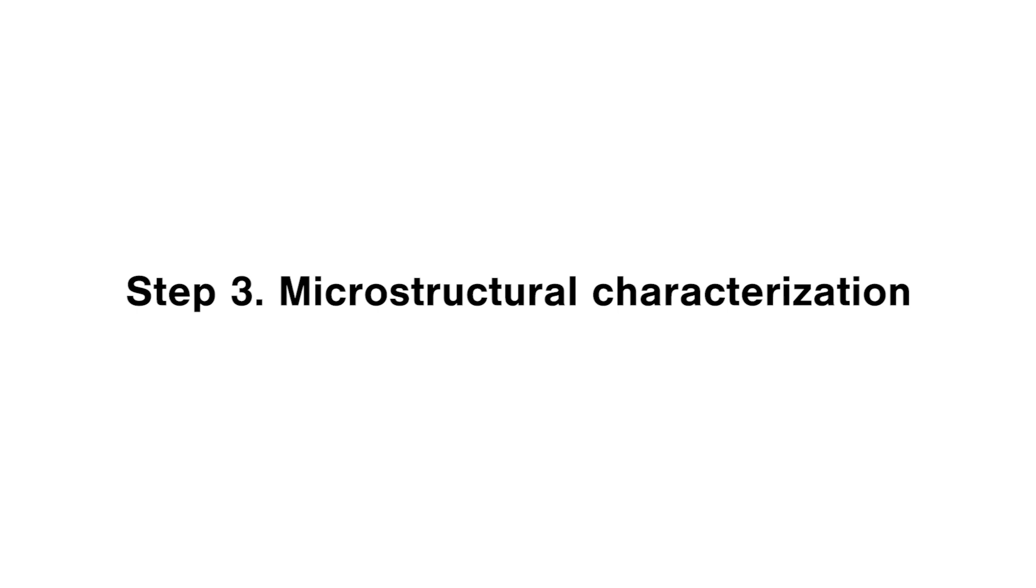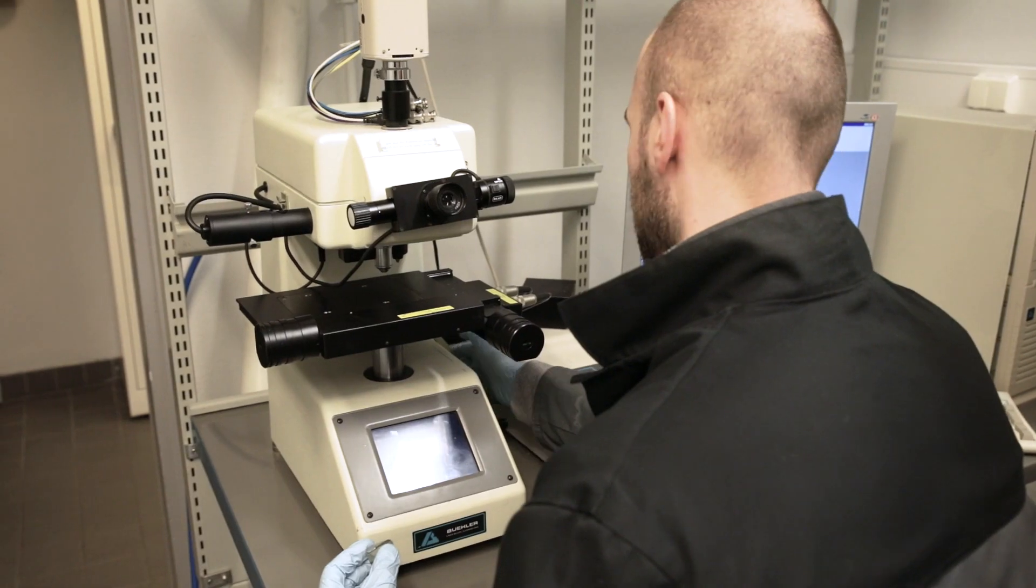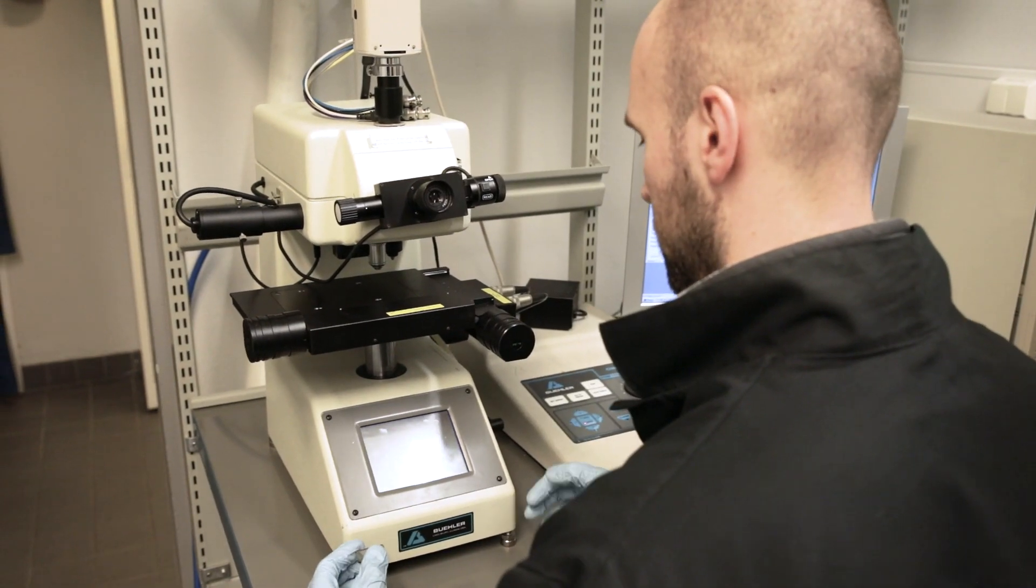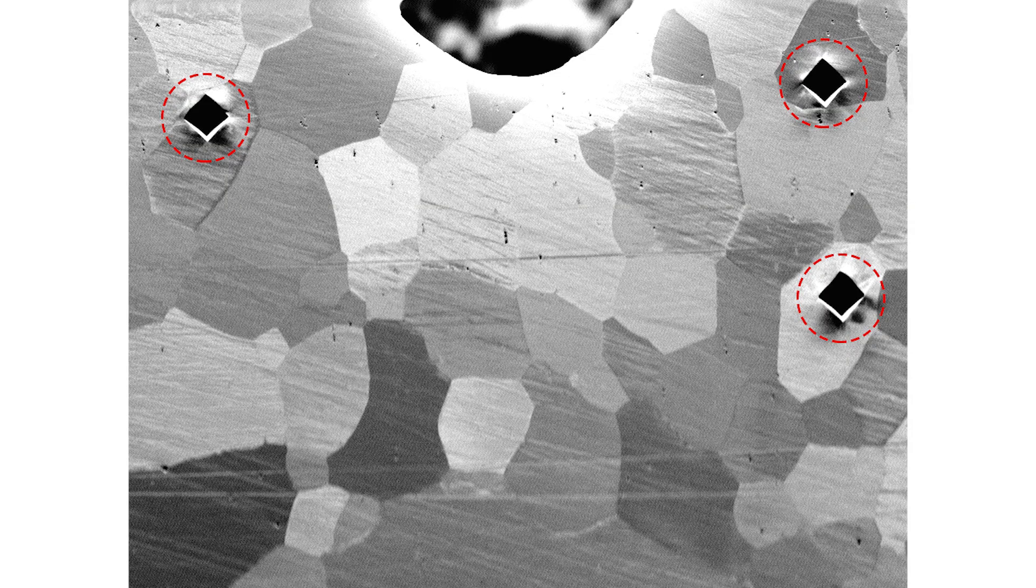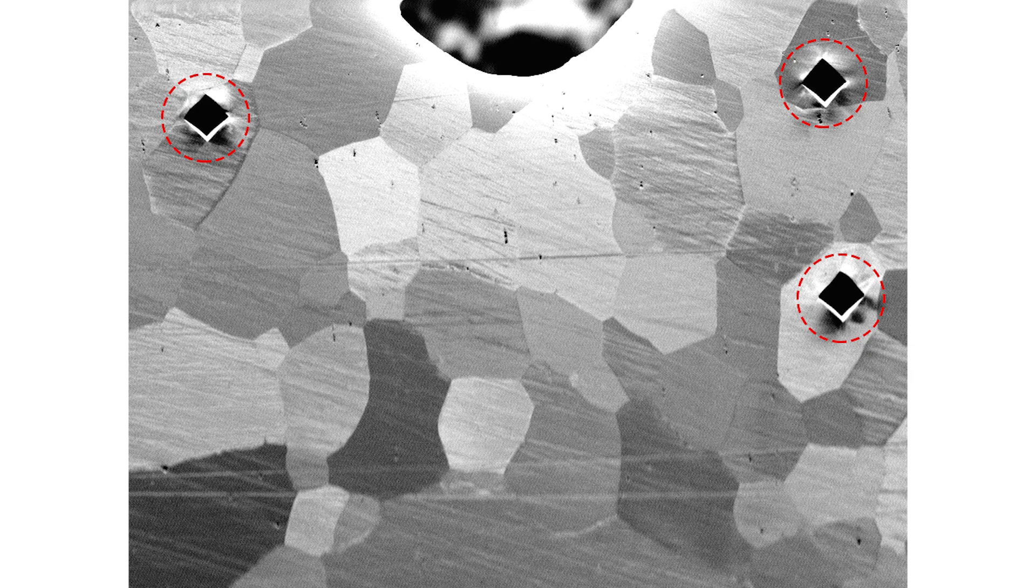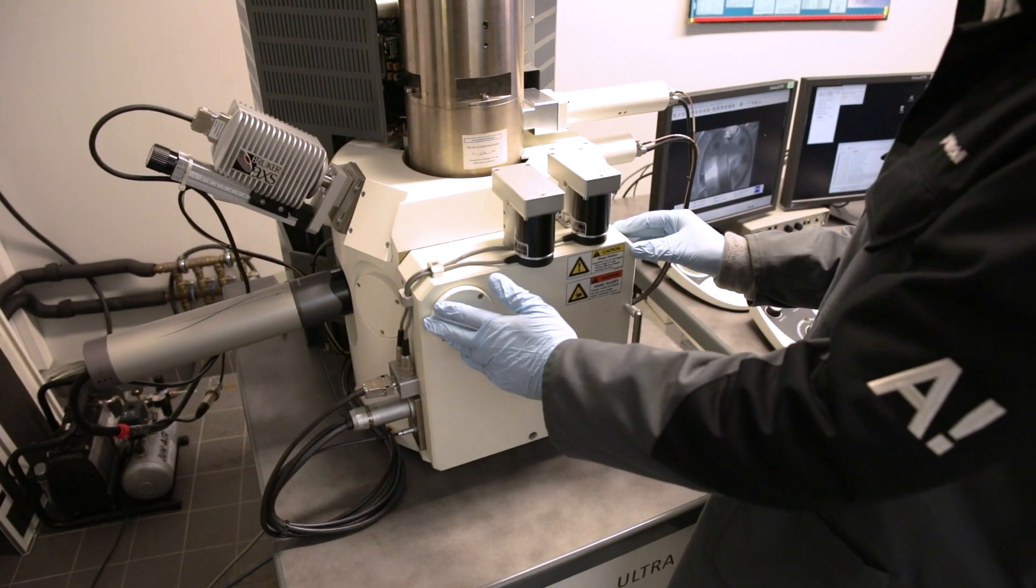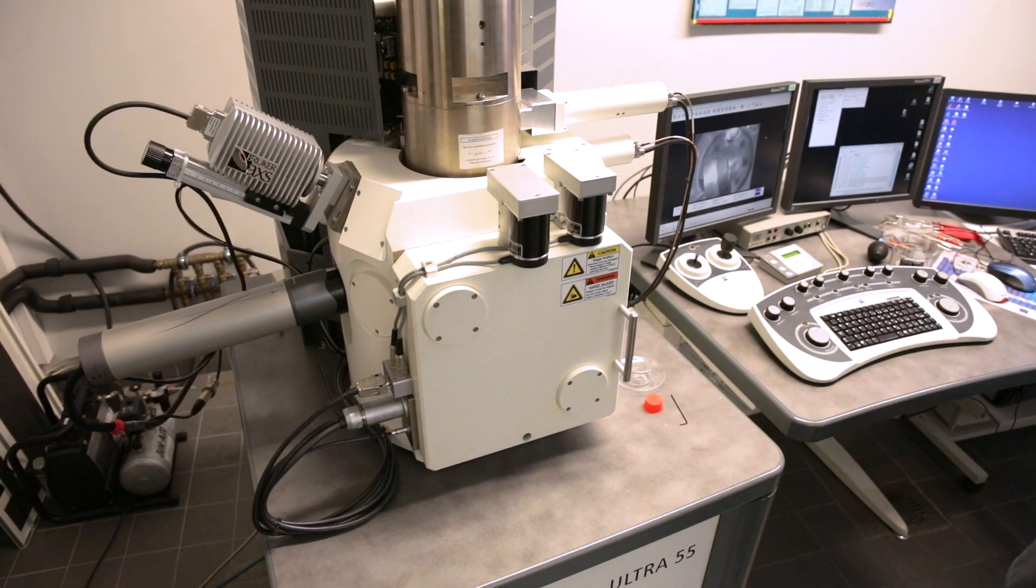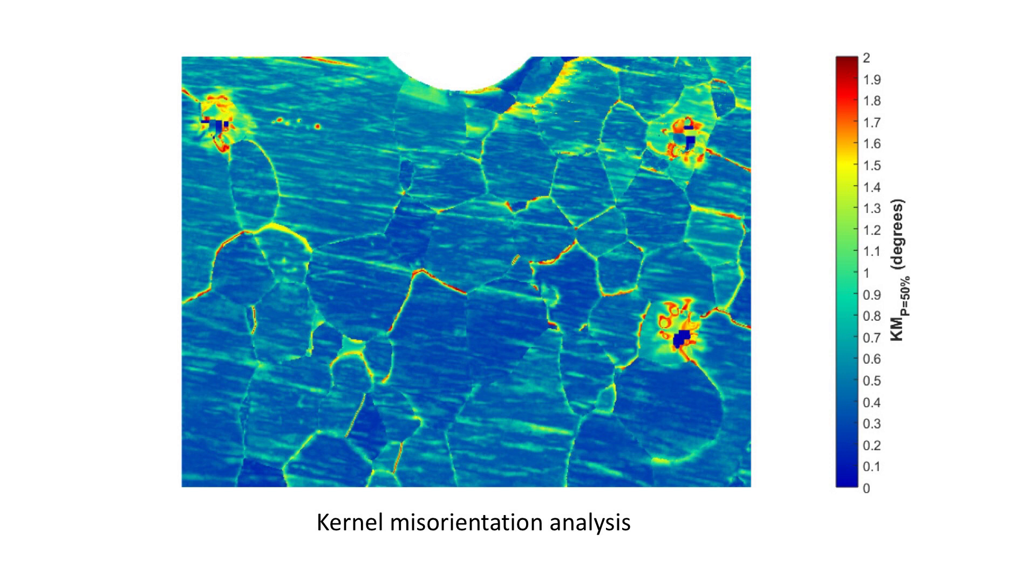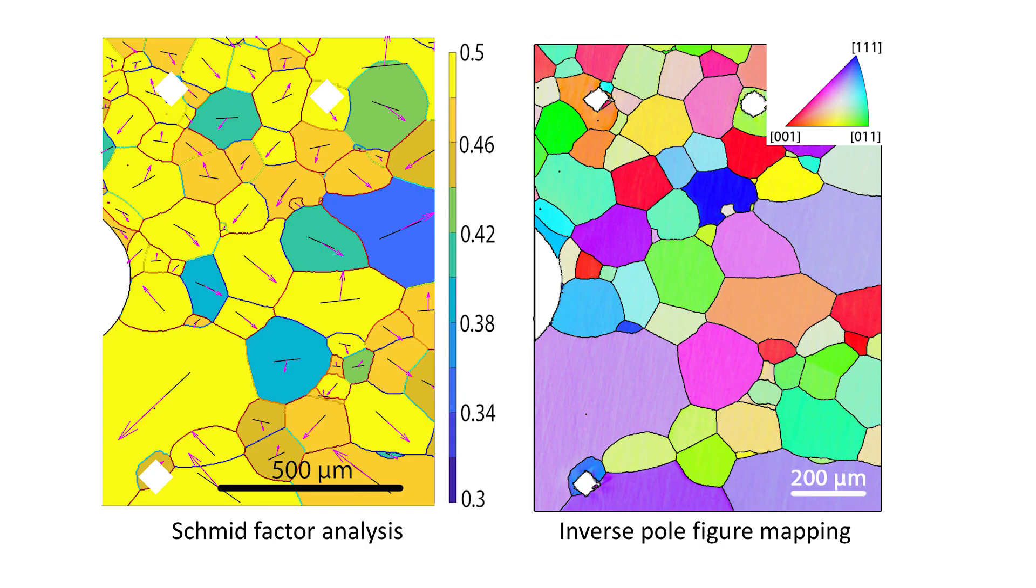Step 3: Microstructural characterization. Vickers micro-indentation marks are used to mark the area of interest. Microstructure of the steel is studied from the side surface of the specimen in the vicinity of the notch using electron backscatter diffraction analysis. Schmidt factor and grain boundary misorientation analysis is carried out as shown here.